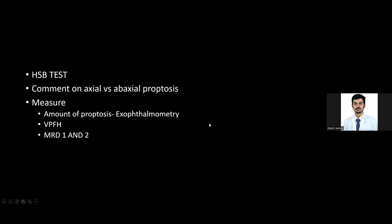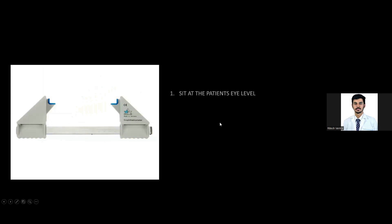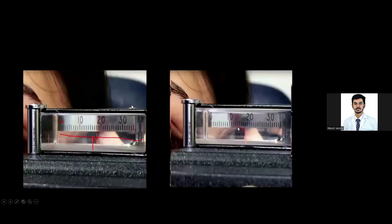This is the Navziger's view. Then do a Hirschberg test and comment on whether the proptosis is axial or ab-axial. Then go ahead and use the exophthalmometer. This is the Hertel's exophthalmometer — you place the rims on the lateral orbital rim of the patient, check the base reading, remove parallax, and read where the vertical line meets the anterior-most part of the cornea.